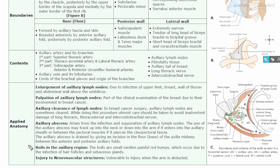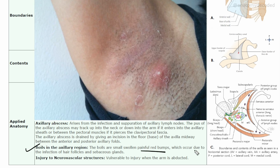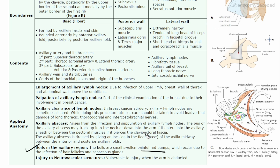There can also be boils in the region of the axilla. Boils are painful red bumps due to infection of the hair follicles and sebaceous glands. The hairs and sebaceous glands in the axilla can get infected, causing pain and swelling. Usually a course of antibiotic medicines is required to decrease the infection.